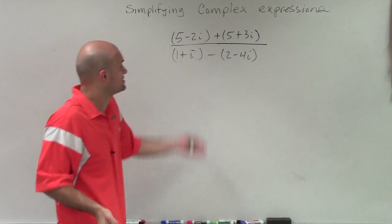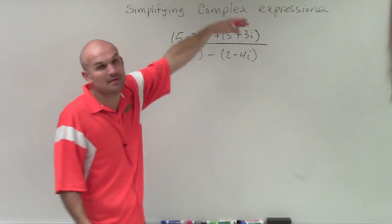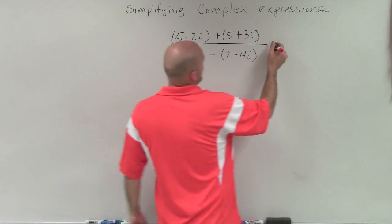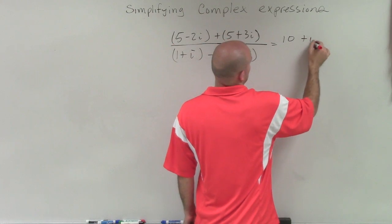So up here, I have just addition of two binomials. And since I'm adding them, I can just combine the like terms. Notice I have my real and my imaginary. So 5 plus 5 is just going to equal 10, and -2i plus 3i is going to equal a positive i.